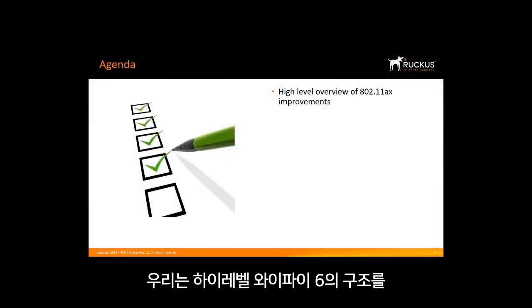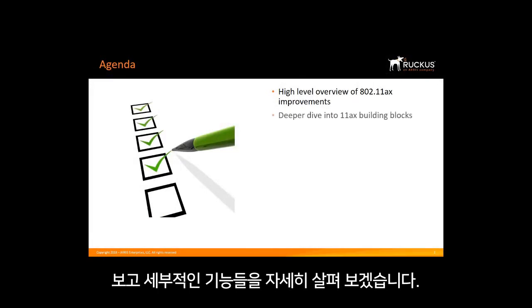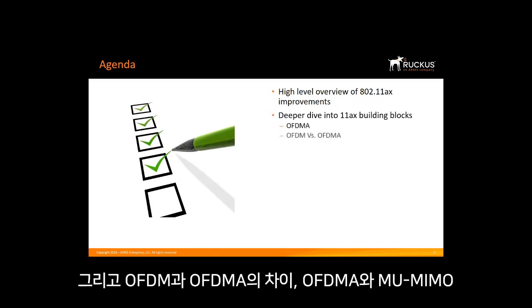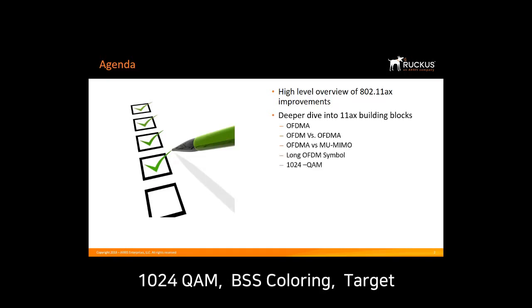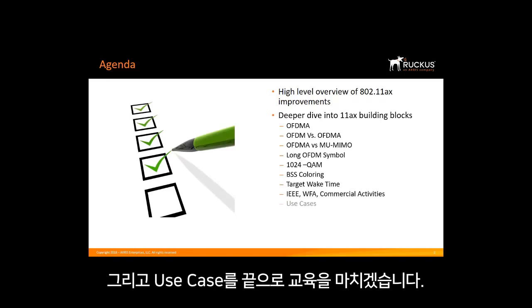We'll start out with a very high-level overview of the building blocks of 11ax, then drill down deeper into each building block. This will include a discussion on OFDMA, OFDM vs. OFDMA, OFDMA vs. Multi-User MIMO, Long OFDM Symbol, 1024 QAM, BSS Coloring, Target Wake Time, IEEE, Wi-Fi Alliance, and Commercial Activities, and we'll finish up by talking about some use cases.